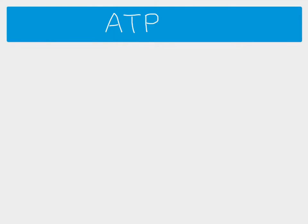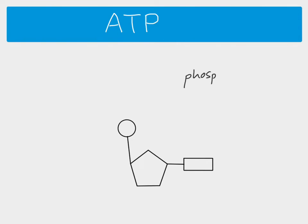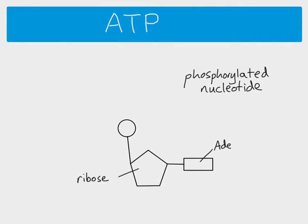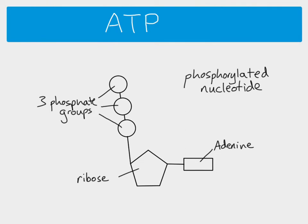We're going to look at ATP as another example of a nucleotide — something that people often don't realise is a nucleotide. ATP is a phosphorylated nucleotide. It's made up of ribose, adenine is the base, and we have three phosphate groups. That's why it's phosphorylated — because we've got an extra two phosphate groups. But it still has the same basic structure of pentose sugar, nitrogenous base, and phosphate group. When ATP is converted into ADP, a phosphate group is removed — and ADP is still a nucleotide.